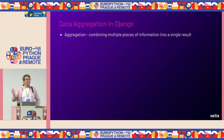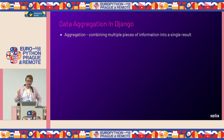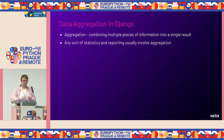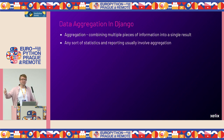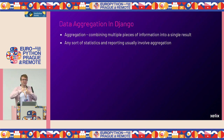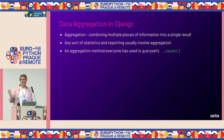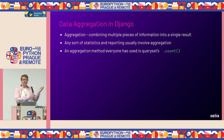What do I mean by aggregating data in Django? Aggregation, for me, is combining multiple pieces of information into a single result. Any sort of statistics or reporting usually involves aggregation — you have a lot of data and need to present it to the user in a readable form. If you've used Django ORM, one of the things you've definitely used is this method called count, which counts the number of objects in a query set. That's a very basic aggregation.